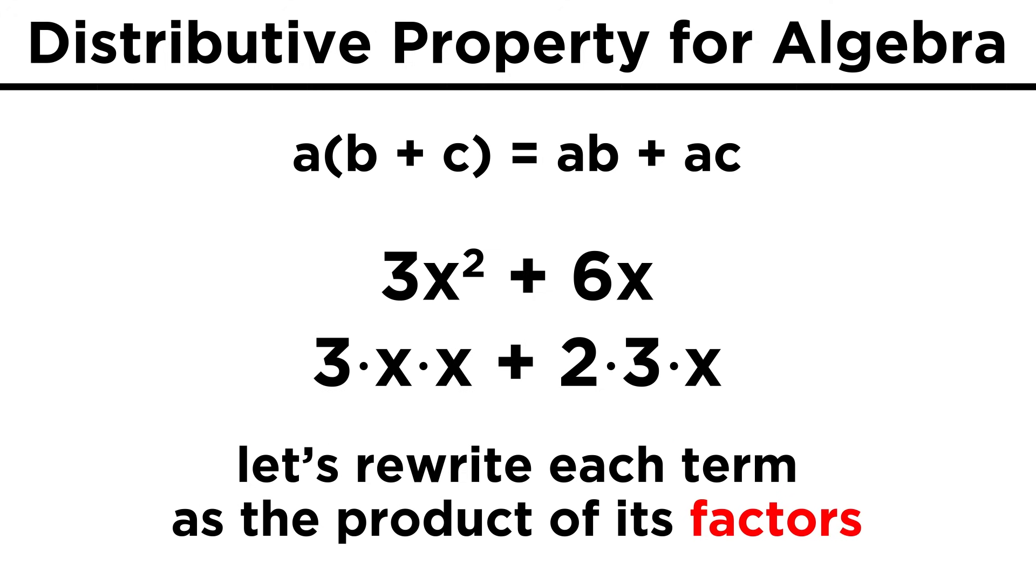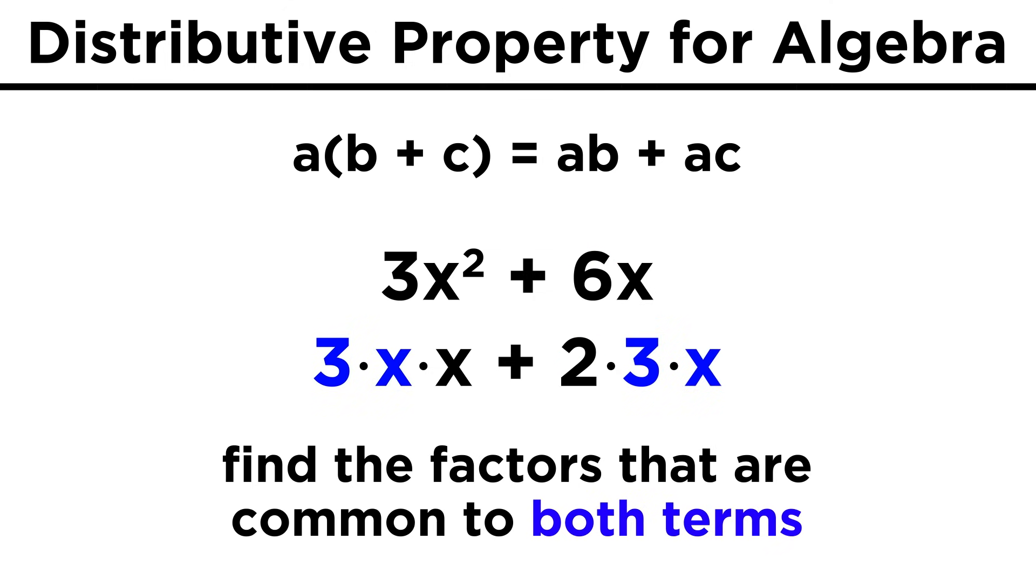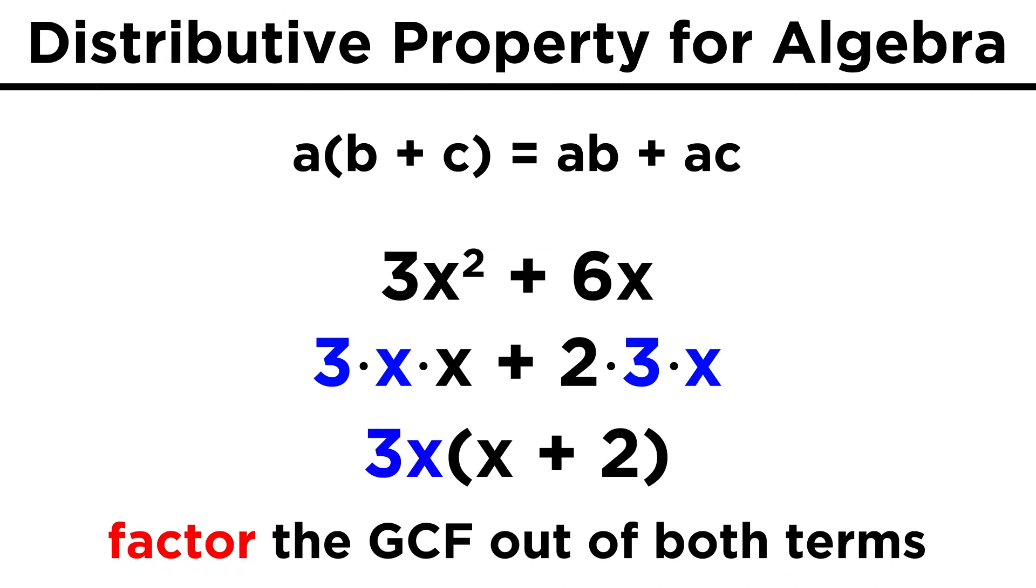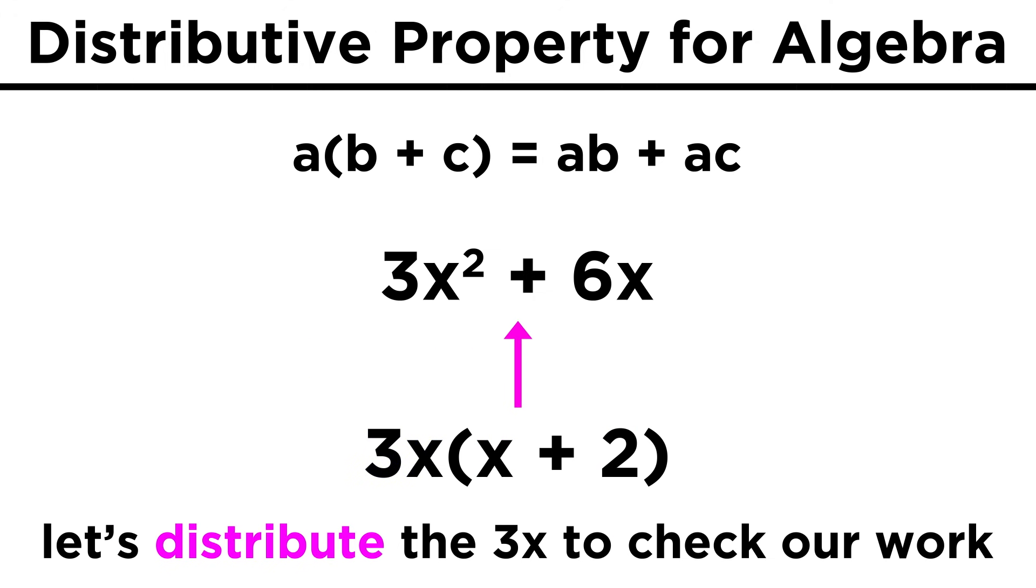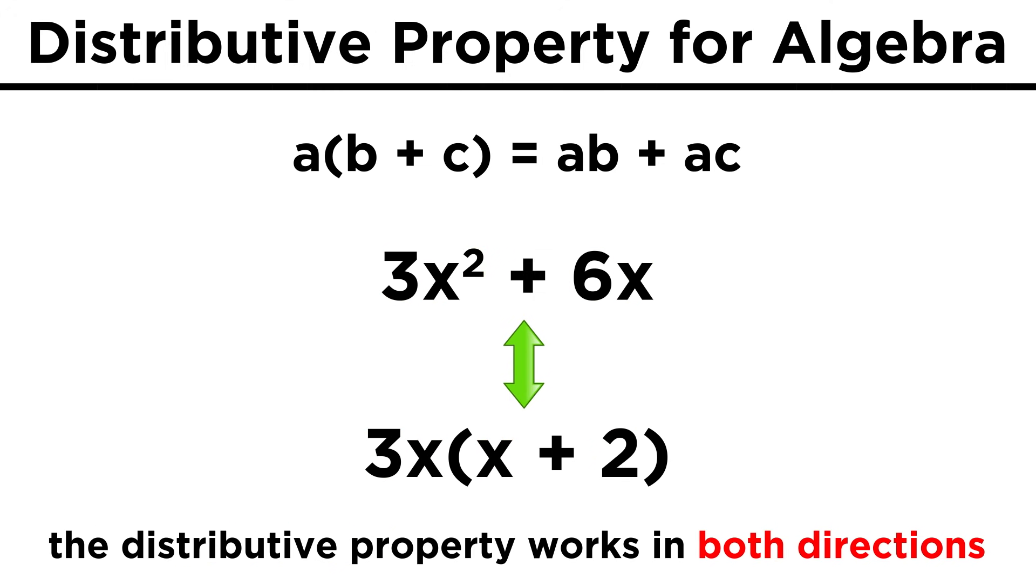In this case, we can rewrite these as three times x times x, and two times three times x. Taking everything we find in both terms, the greatest common factor would be three x, and if we pull a three x out of both terms, meaning we are dividing each term by three x, we end up with the three x out here, and then x plus two in parentheses. We can verify that this worked as expected by then distributing the three x across the sum. Three x times x is three x squared, and three x times two is six x, so we can use the distributive property in a variety of ways to generate equivalent expressions.